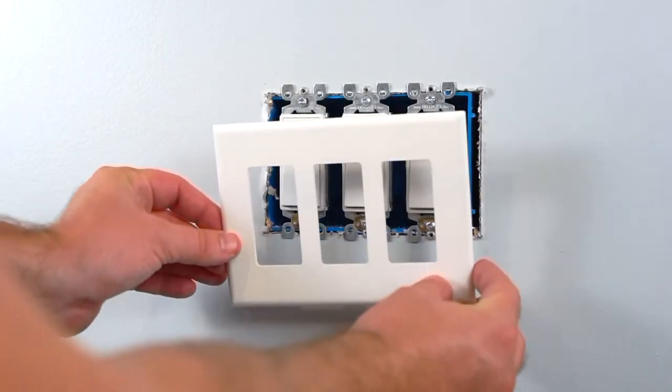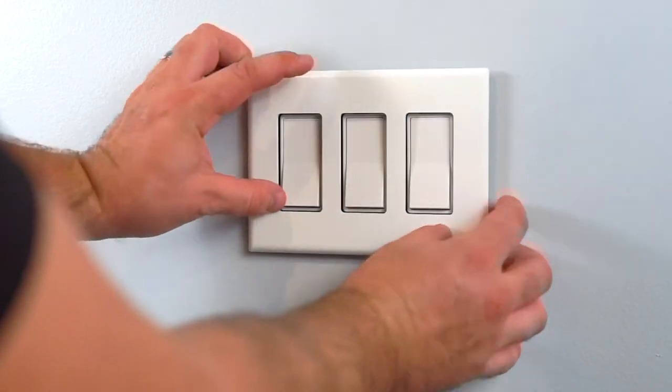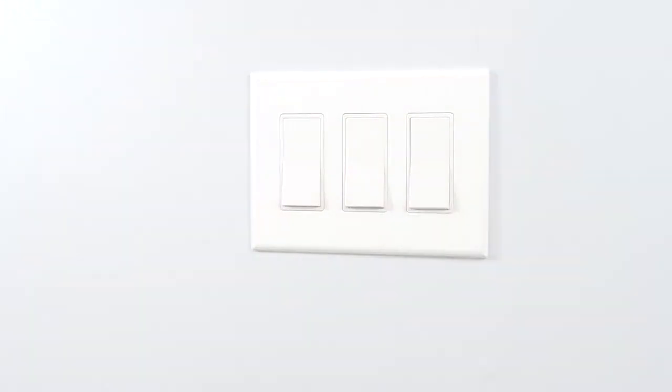To install the triple gang, align the bottom outer prongs while aligning the top and firmly press on.